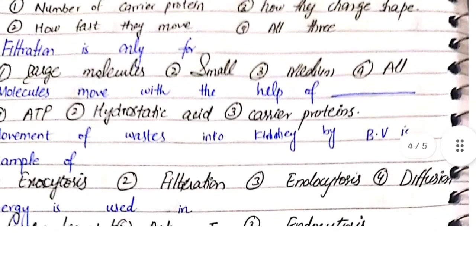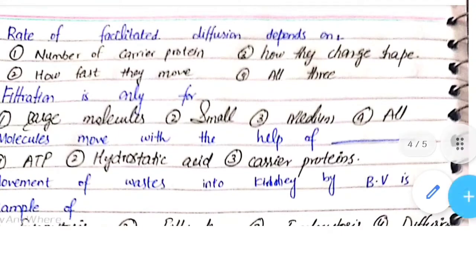Rate of facilitated diffusion depends on: option one - number of carrier proteins, option two - how fast they move, option three - how they change shape, option four - all of them. Basically, the rate of diffusion depends on the number of proteins and how fast they move, so both A and B apply.